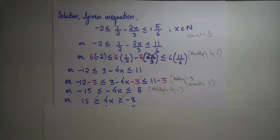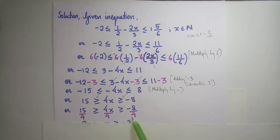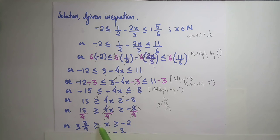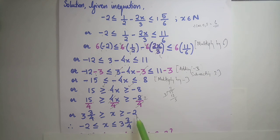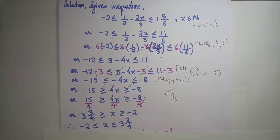Now 4 is disturbing us, so divide all sides by 4: −8/4 ≤ 4x/4 ≤ 15/4, giving −2 ≤ x ≤ 3(3/4). Always write the smaller number on the left-hand side. So the final inequation is −2 ≤ x ≤ 3¾. This is the solution range on the number line.